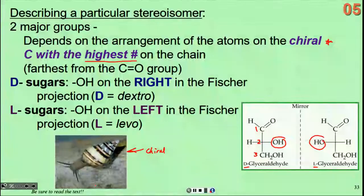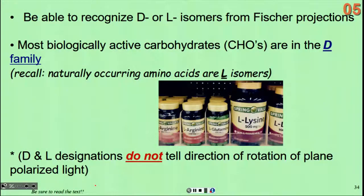Let's try it out. Think about our comparisons here first. We are going to want to be able to recognize them from the D and L isomers in the Fischer projections. But recognize that all the biologically active carbohydrates are going to be D isomers, as opposed to amino acids that are going to be L isomers. Why? Because nature says so. We don't have to know any more reason than that. L amino acids and D sugars.